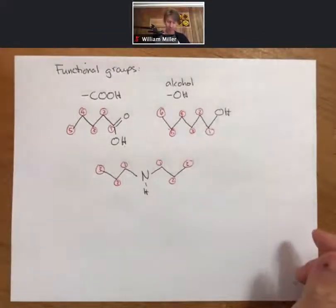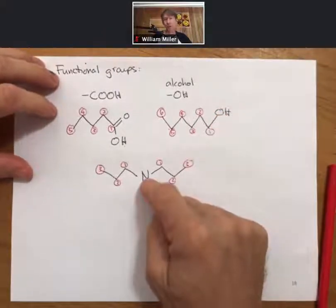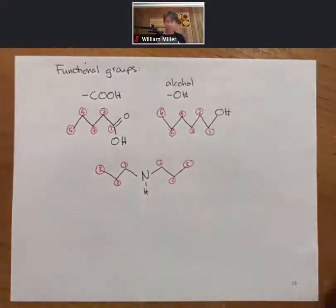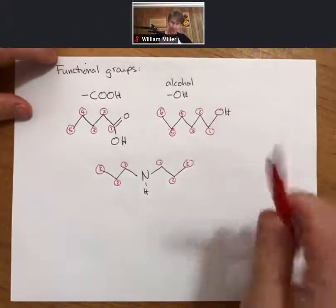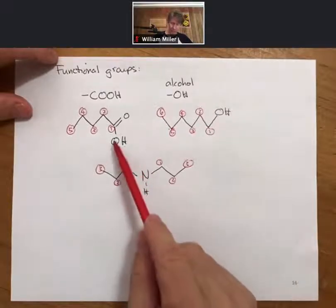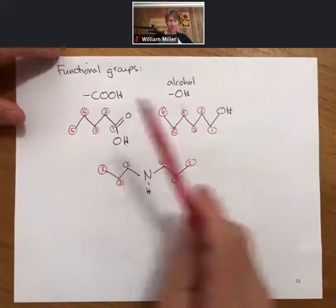For skeletal structures, you don't have to draw all of the pairs of electrons. Remember, for Lewis structures, you do draw all pairs of electrons. But for skeletal structures, they're really a shorthand notation. And if you were to draw the full Lewis structure, then this oxygen has two pairs of electrons. This nitrogen has one pair of electrons. And these two oxygens each have two pairs of electrons.